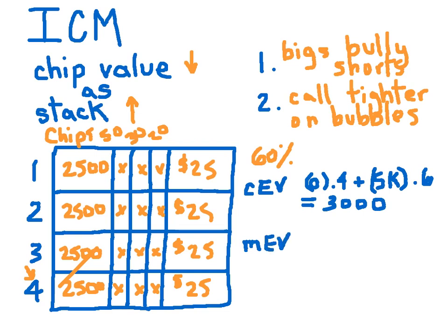So 40% of the time we're going to bust, we're not going to get any prize at all. So that's easy, we get zero times 40%. How about the 60% of the time we double up to 5,000 chips? What does that mean for our prize equity, our monetary expected value? Well, you plug in the new chip stacks to the ICM calculator, link below in the description again, but we'll do it for you right here.